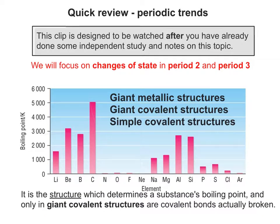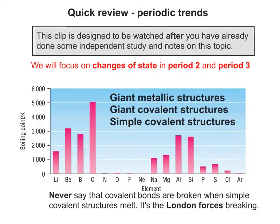So we have giant metallic structures, giant covalent structures, and simple covalent structures. It's the structure which determines a substance's boiling point, and only in giant covalent structures are covalent bonds actually broken during the boiling and melting processes. A very important point: never say that covalent bonds are broken when simple covalent structures melt — it's the London forces breaking.